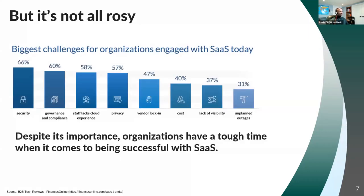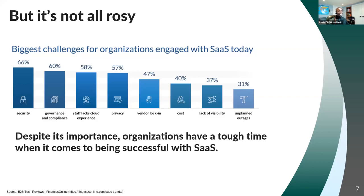Unfortunately, it's not all rosy. The biggest challenges for organizations using SaaS today include security, governance and compliance, staff lacking cloud experience — what does it mean to have applications sitting on the internet versus installed locally? Privacy concerns is always a big one, vendor lock-in, cost, lack of visibility, unplanned outages, and support challenges. Despite its importance, organizations have a tough time being truly successful with cloud technologies or software as a service.